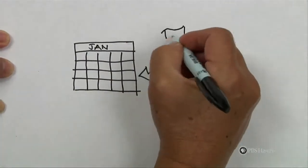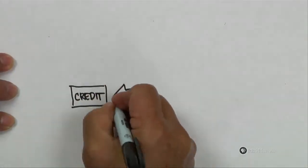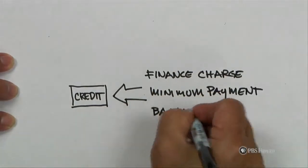Responsible cardholders completely pay off their balances every month. Finance charge, minimum payment, and balance are three separate things.